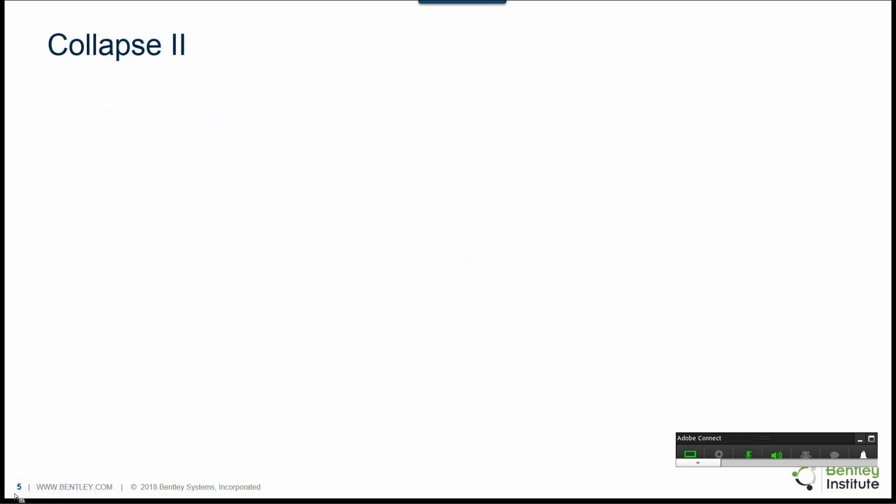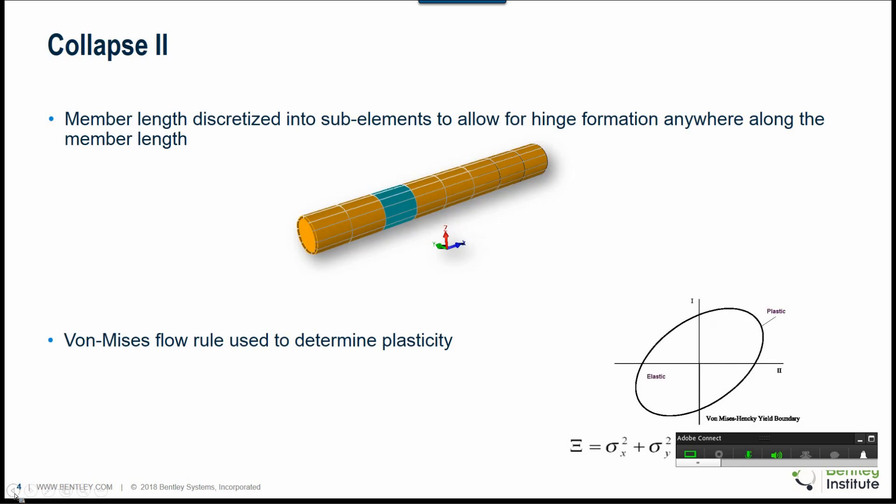Back note other programs out there limit the formation of a hinge at the ends and the center of a member, which of course is not always the case, especially if the stiffness at either end of the member is different. Besides limiting the hinge formation at the ends and the center of the member is effectively predefining your failure mechanism.